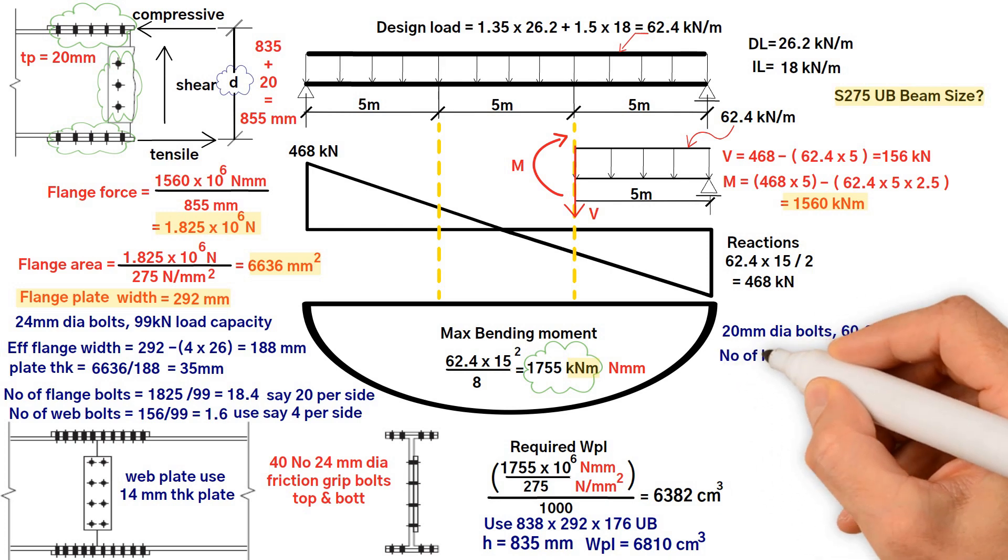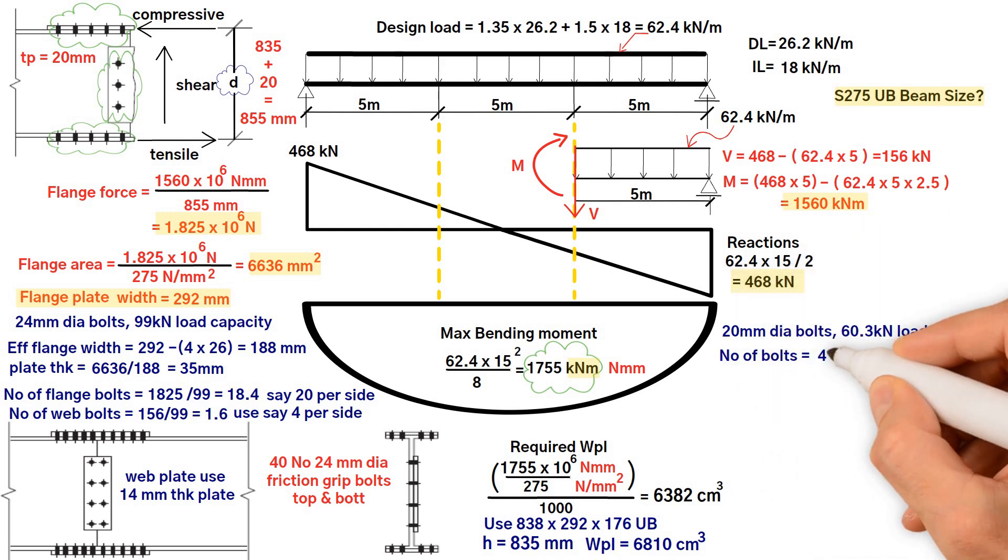Therefore, the number of bolts required is maximum shear at the end plate, which is 468 kilonewton, divided by the bolt load capacity 60.3 kilonewtons equals 7.8, round this up to 8.